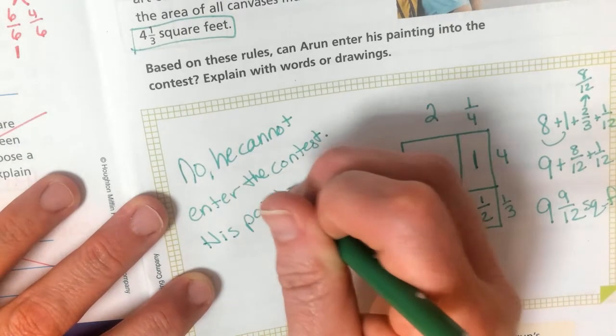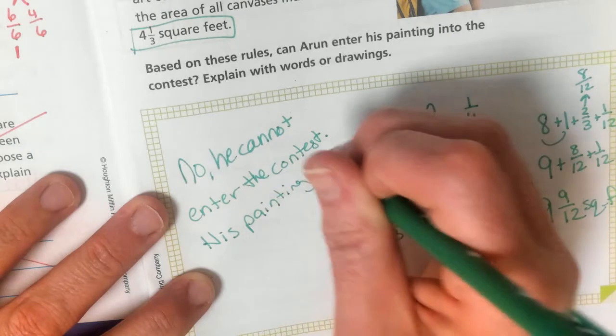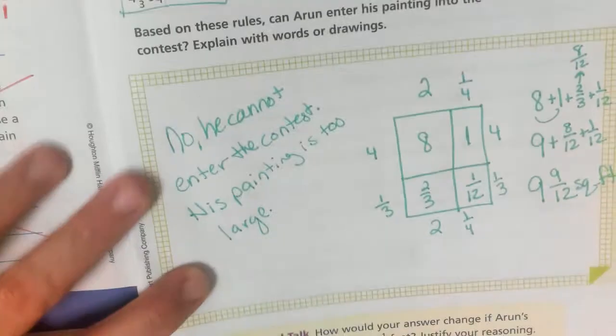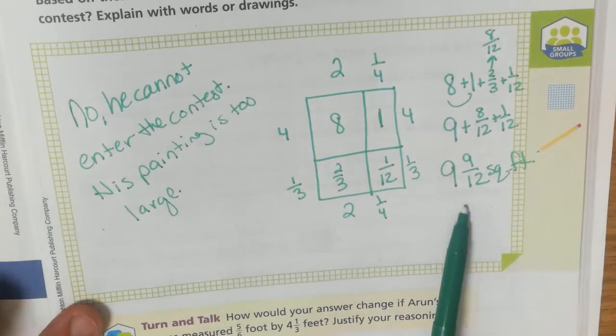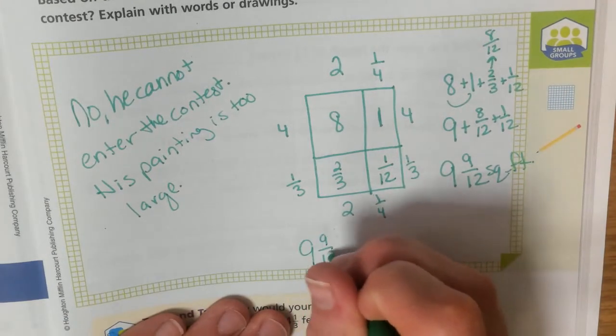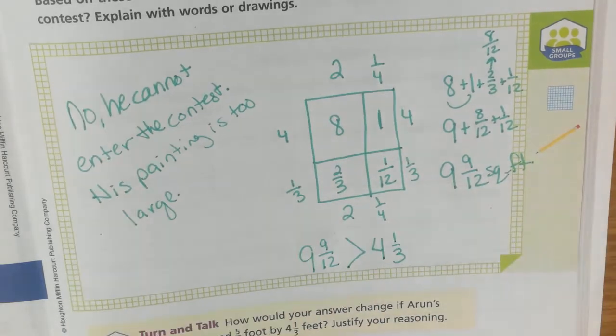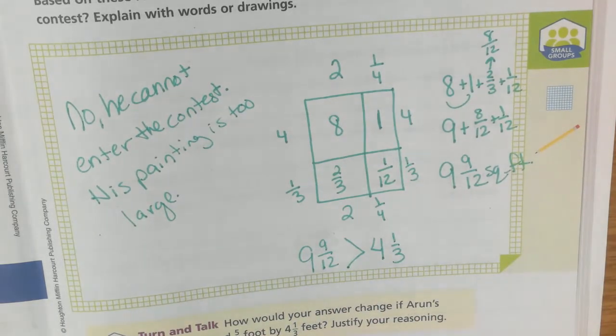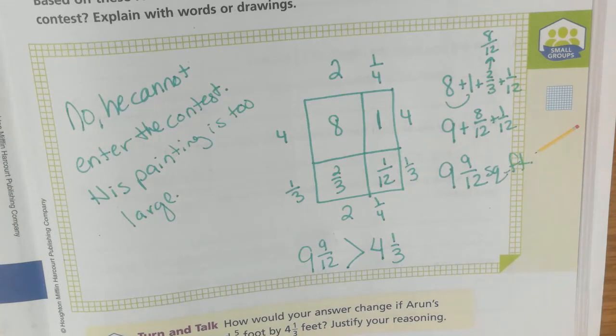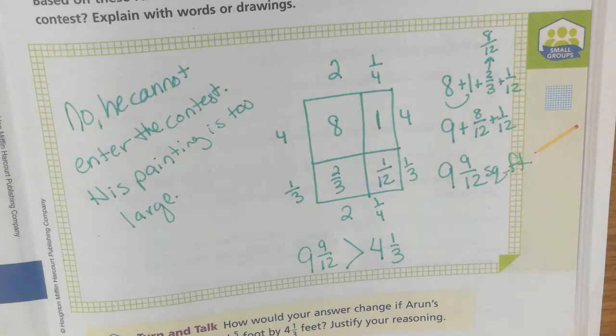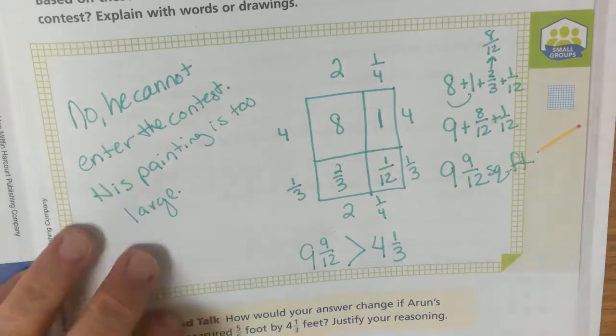His painting is too large. And, we can see that right here, right? 9 and 9 twelfths is greater than 4 and 1/3. Okay? So, just by using that area model, when we were learning our area model with our fractions, we were able to figure that out.